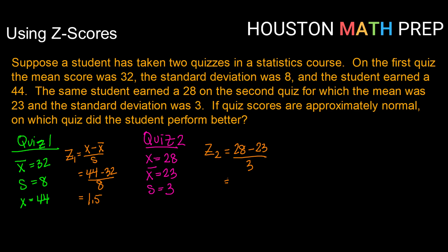Using my calculator there, I get a z-score of 1.67. So on quiz two, the student scored 1.67 standard deviations above the mean.